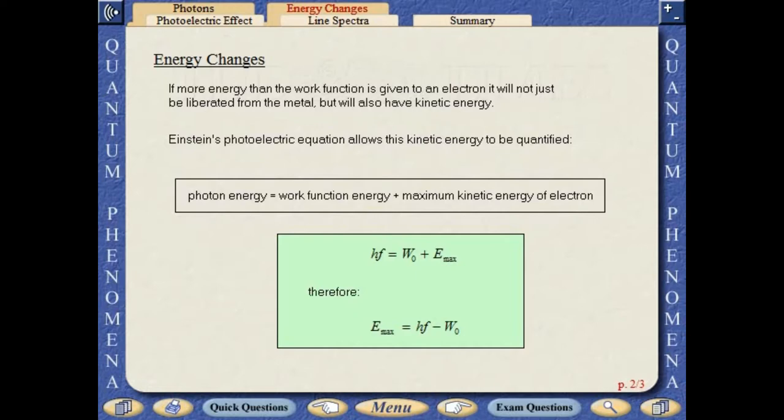If more energy than the work function is given to an electron, it will not just be liberated from the metal, but will also have kinetic energy. Einstein's photoelectric equation allows this kinetic energy to be quantified. Photon energy equals work function energy plus the maximum kinetic energy of the electron.